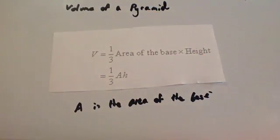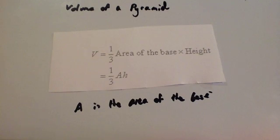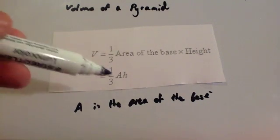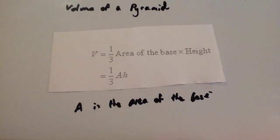And that works for all types of pyramids. It works for square-based pyramids, triangular-based pyramids, and even cones. For a cone, you get a third times the area of the circle times the perpendicular height, and that gives you the volume of the cone.